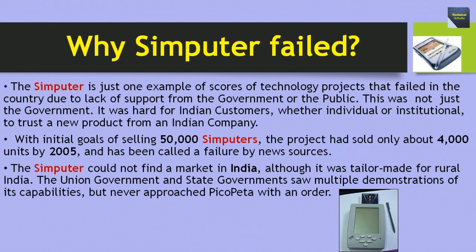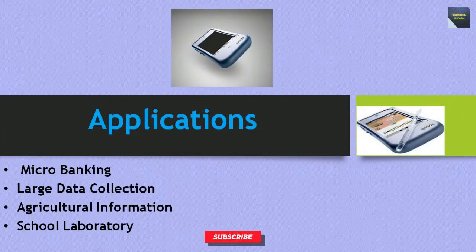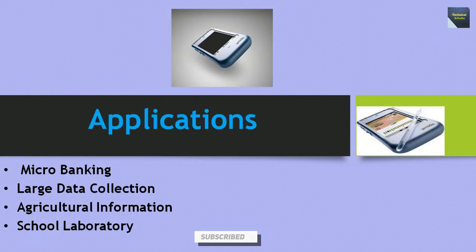The Simputer could not find a market in India although it was tailor-made for rural India. The Indian government and state governments saw multiple demonstrations of its capabilities but never approached Pico-Peta with an order. Some applications where the Simputer is used include the fields of micro-banking, large data collection, agricultural information, and school laboratories.